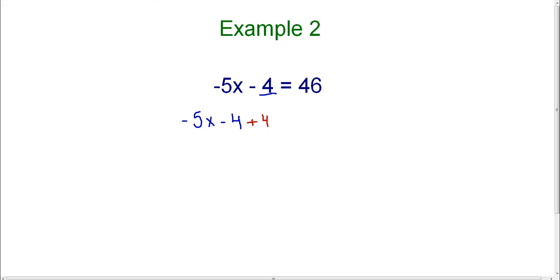So if we add 4 to both sides, then we can get rid of the minus 4. And remember the rule is whatever I do to one side, I must do to the other side. And that's why I'm adding 4 to both sides of the equation.